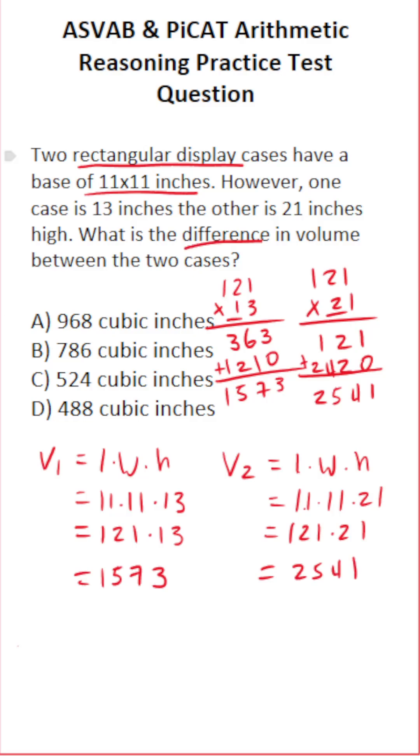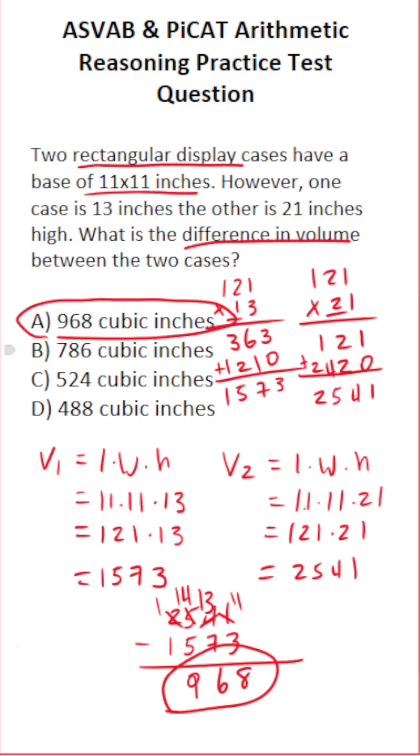Of course, we want to find the difference in volume, so we're simply going to subtract our volumes. Specifically, we're going to do 2541 minus 1573. We can't do 1 minus 3, so we borrow. This becomes 3, this becomes 11. 11 minus 3 is 8. 3 minus 7, we can't do, so we borrow. This becomes 4, this becomes 13. 13 minus 7 is 6. 4 minus 5, we can't do, so we borrow. This becomes 1, this becomes 14. 14 minus 5 is 9. 1 minus 1 is nothing. So the difference in volume of these two rectangular display cases is 968 cubic inches.